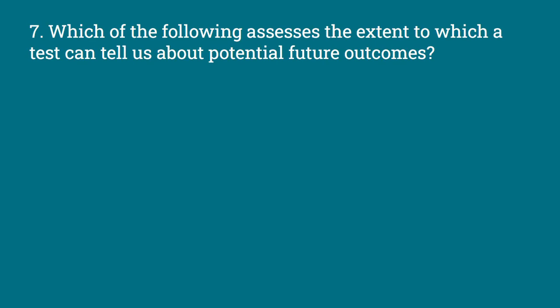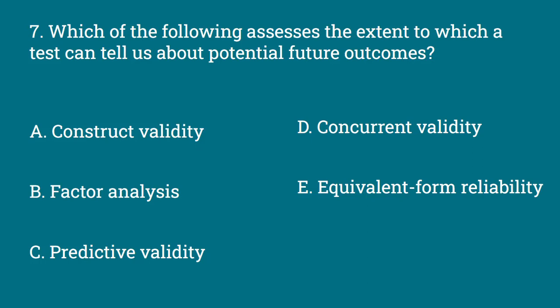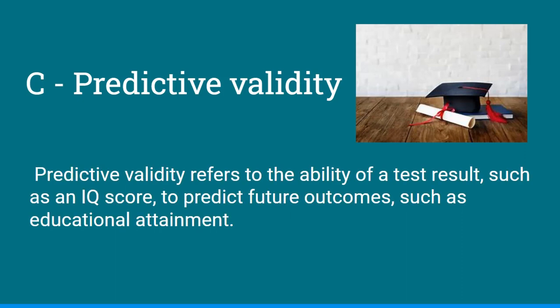Which of the following assesses the extent to which a test can tell us about potential future outcomes? The options are Construct Validity, Factor Analysis, Predictive Validity, Concurrent Validity, and Equivalent Form Reliability. The answer is C, Predictive Validity. Predictive validity refers to the ability of a test result, such as an IQ score, to predict future outcomes, such as educational attainment.